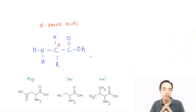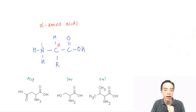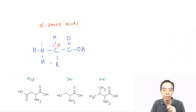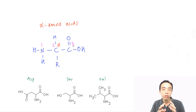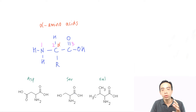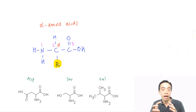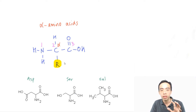Remembering alpha amino acids is fairly easy — you just need to remember these three positions. Position 1 is my amine group, my NH2. Position 2 is the carbon with my R group. And position 3 is my acid group. The only difference between one amino acid and another is in the R group, so I need to look at the second carbon and identify the R group sticking to it to identify the particular amino acid.